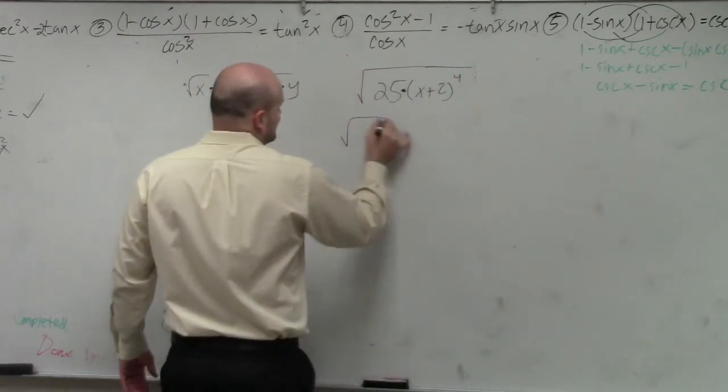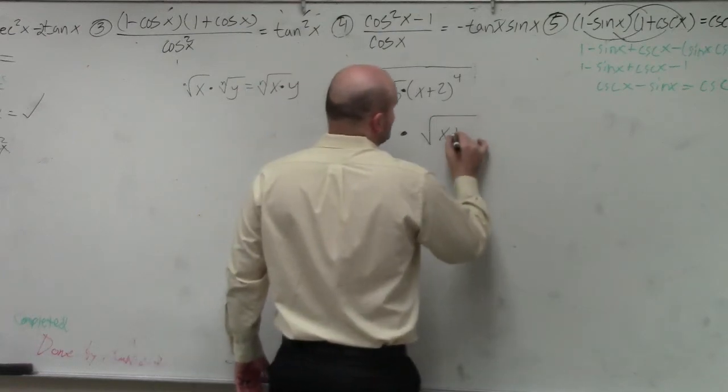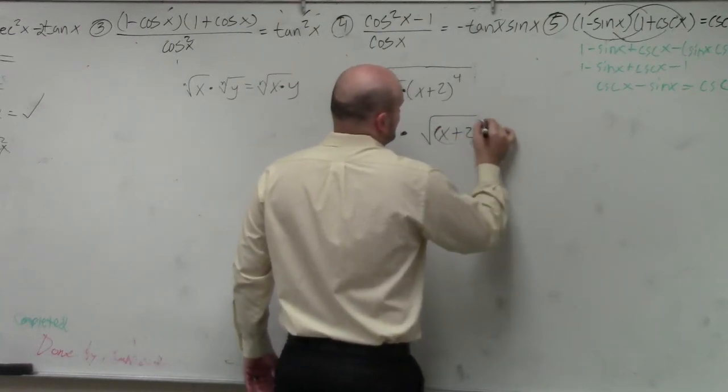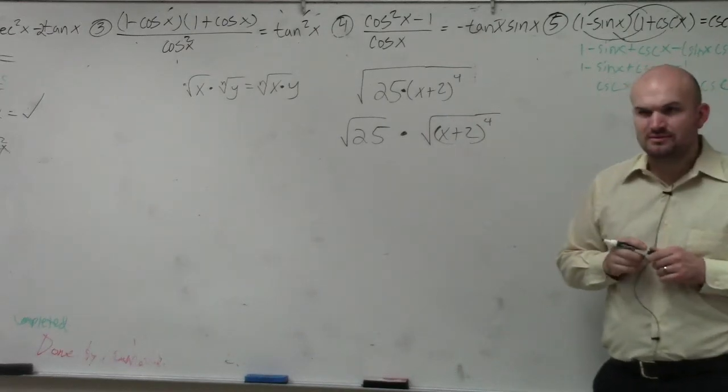So I can really separate this into square root of 25 times the square root of x plus 2 to the fourth power. Does everybody kind of agree with that or kind of see that? Yes? OK.